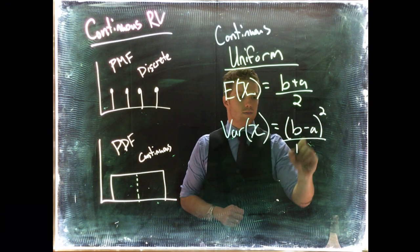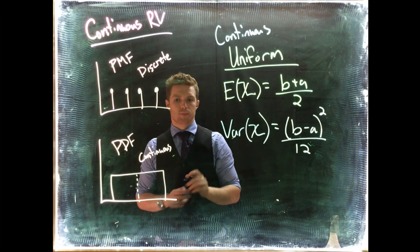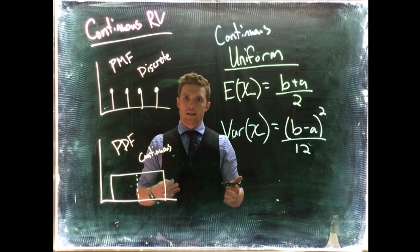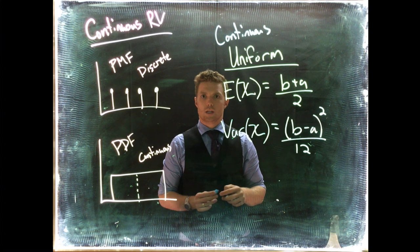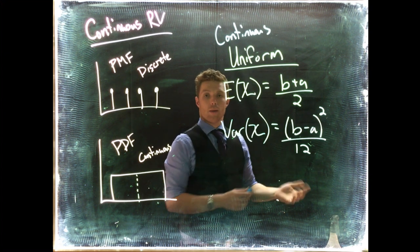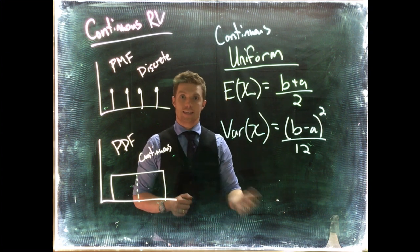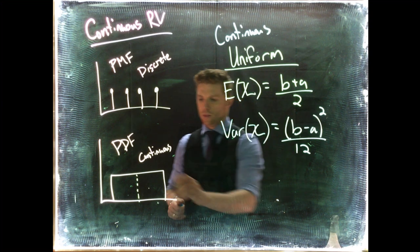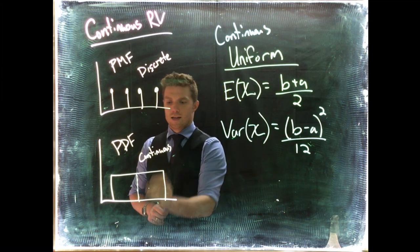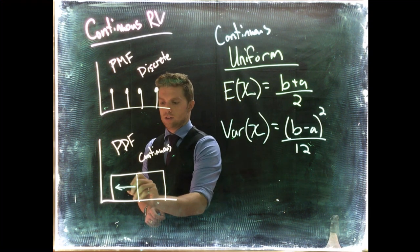divided by 12. Okay, to find the associated probabilities, we can either dive into our commander, and our commander will just give us the probabilities if we look from a specific point, and then we can get the area to